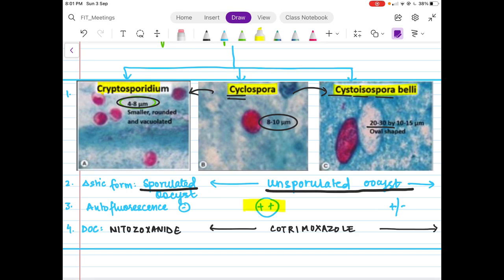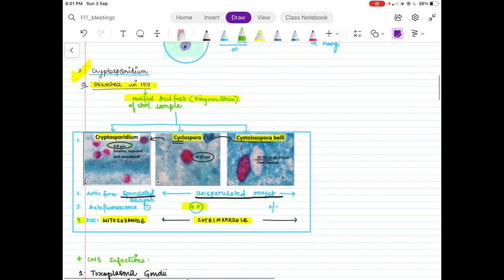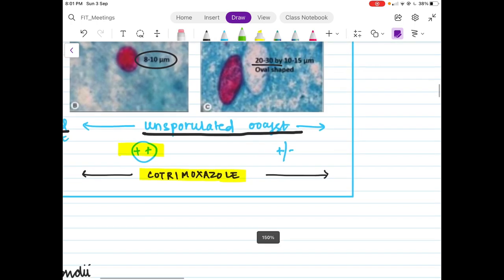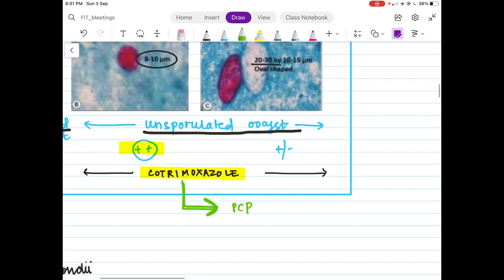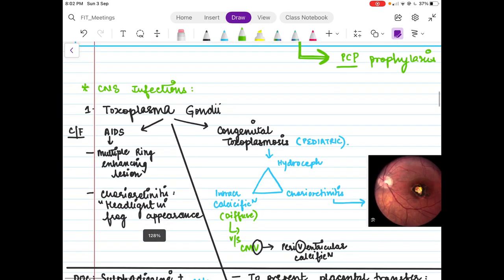Remember the images and the size is very important. Diagnostic form is sporulated oocyst, unsporulated for these. Autofluorescence is seen in Cyclospora and very important is the drug of choice: nitazoxanide for Cryptosporidium and cotrimoxazole for Cystoisospora belli. A patient who has AIDS presenting with persistent diarrhea, you would do this. Also, can you tell me if you have a patient with AIDS, where would you use cotrimoxazole? You do use it for pneumocystis pneumonia prophylaxis. If a patient is already on pneumocystis pneumonia prophylaxis, there is very less chance that they get these two organisms: Cyclospora and Cystoisospora belli.